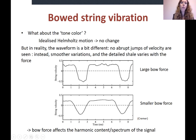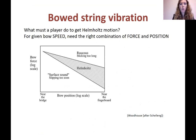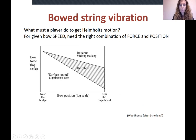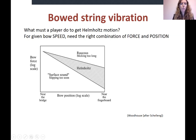So the bow force will affect the harmonic content of the signal. What must the player do to get Helmholtz motion? For a given bow speed, you need the right combination of force and position. This is called the Schelling diagram — here the bow force is on a logarithmic scale and the bow position on a logarithmic scale as well, near the bridge on the left and near the fingerboard on the right. There is a triangular range of Helmholtz motion. Outside this range, either the sticking is too long — giving a raucous sound — or you don't press enough and you get a surface sound.